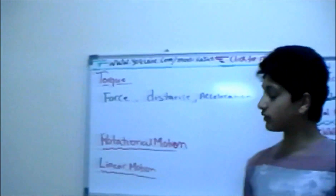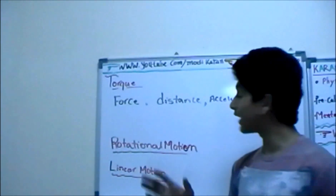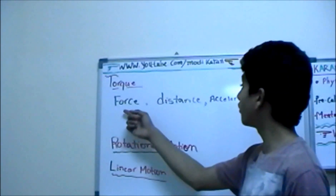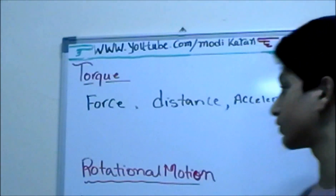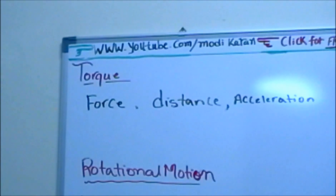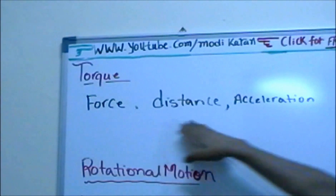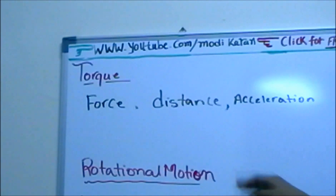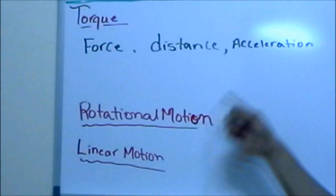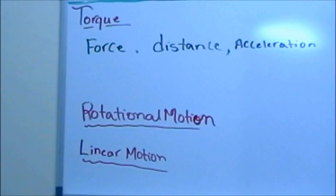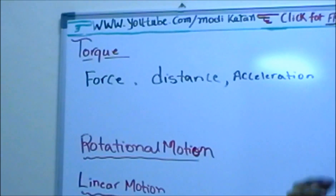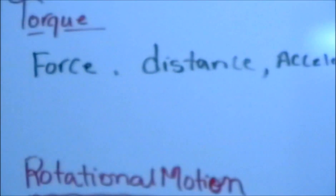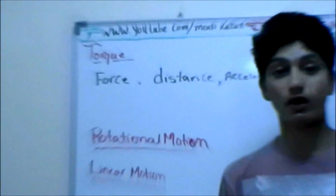Now let's go back to our topic. In this section we'll be talking about torque. Let's take a preview of what we already know — force, distance, and acceleration. These three things are related to linear motion, which I talked about in my previous videos. These three things can also be related to rotational motion. There's one more thing that adds up only for rotational motion — torque. In this section I'll be talking about torque, how it is related mathematically, and we'll solve some examples.